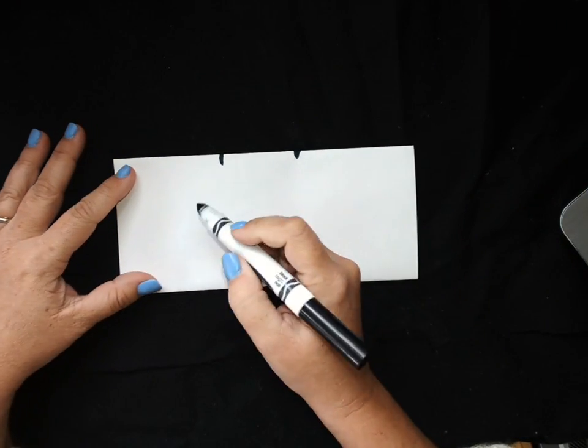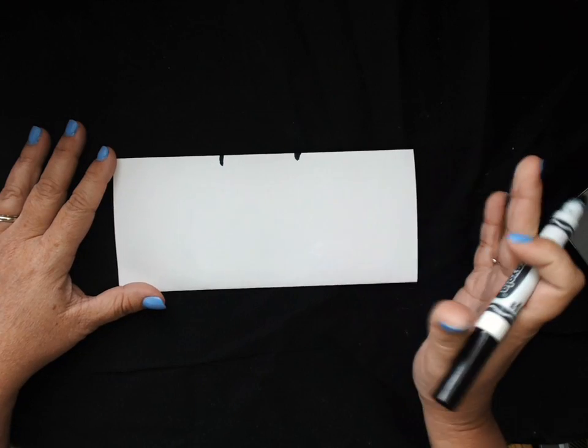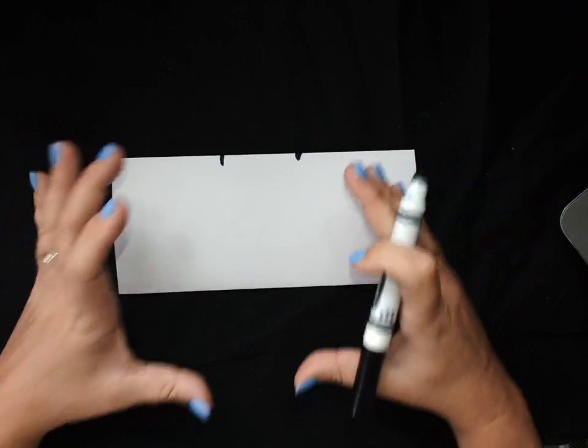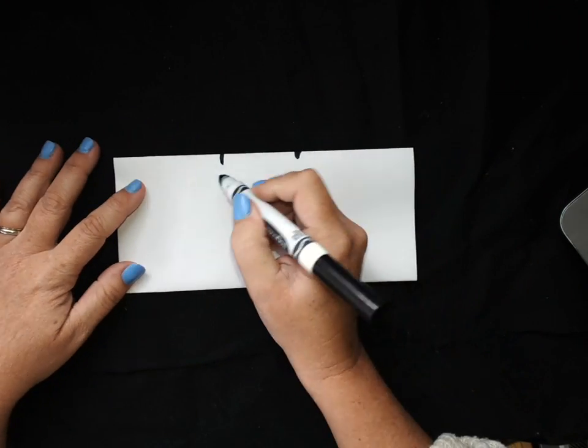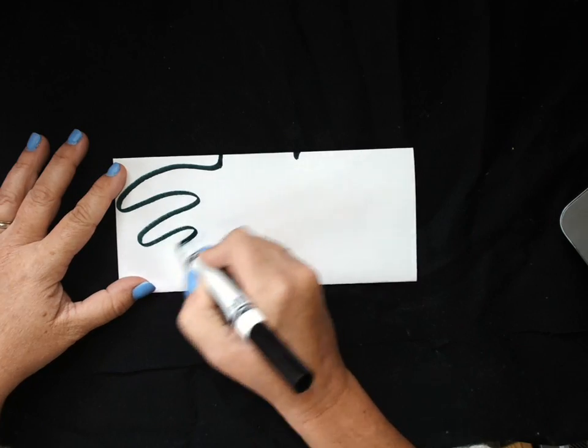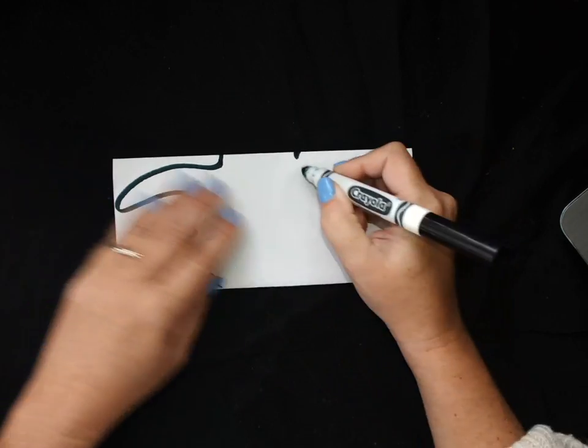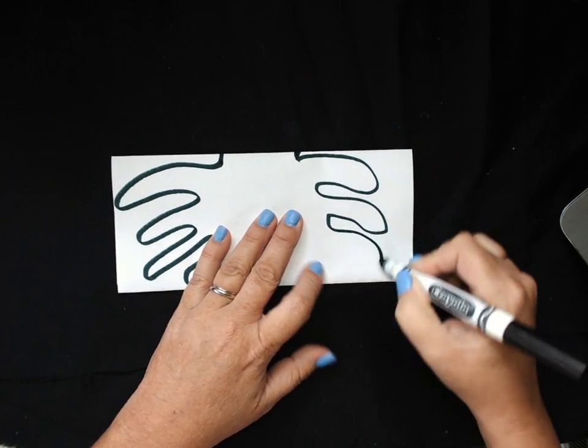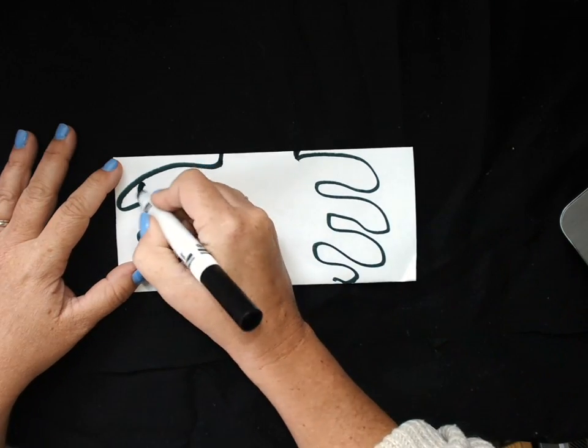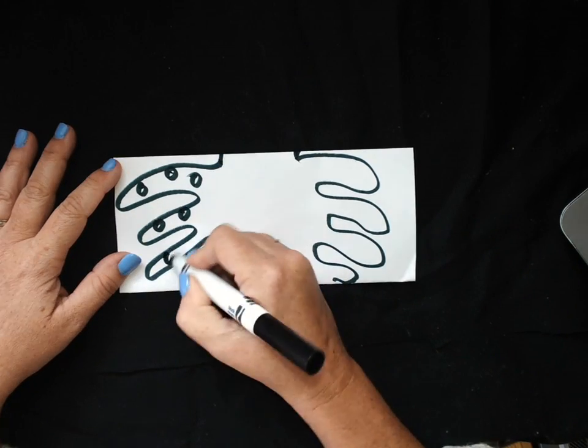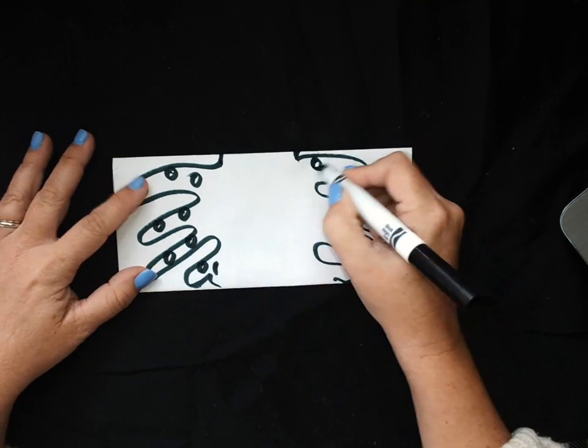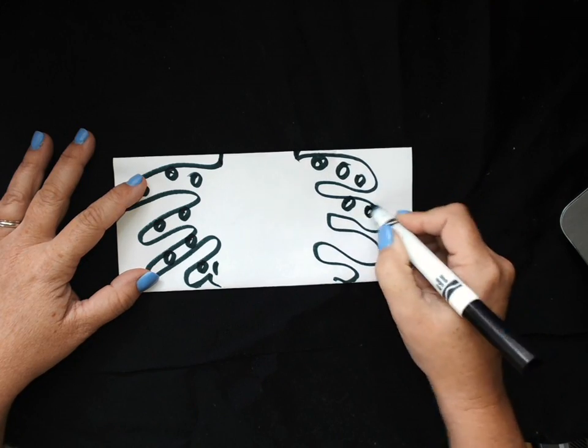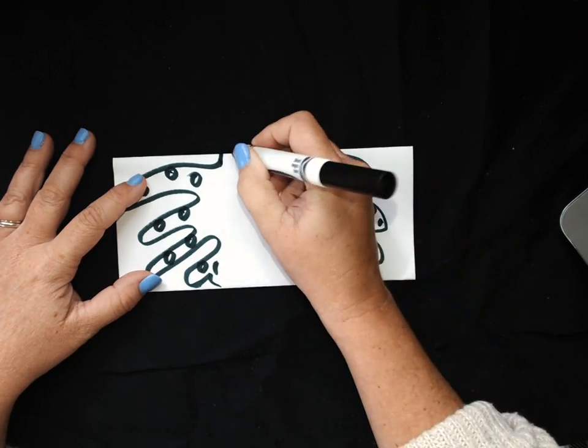And then the next person is going to create the arms and the torso, the middle part of the body. Anything that you want to do. I could do some kind of an octopus looking thing, give him some suckers. You can be as silly as you want.